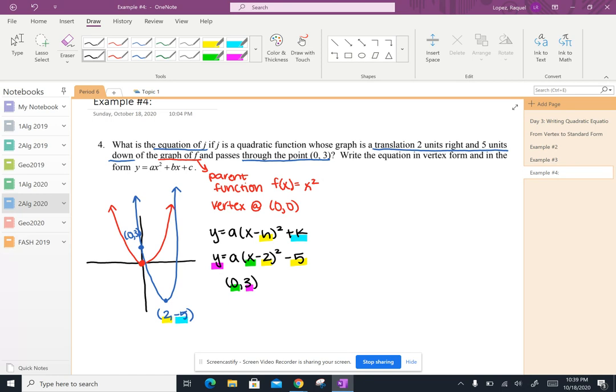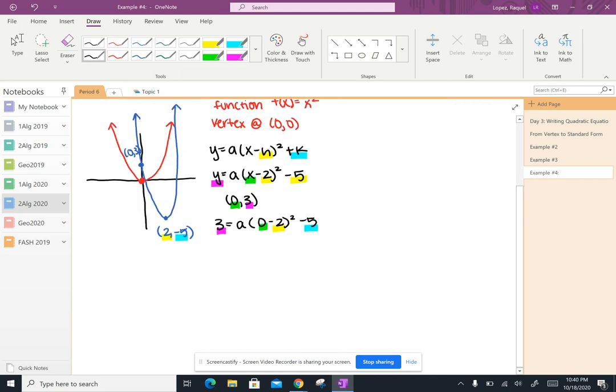So when I plug those values in, I get three equals, I don't know what a is, zero minus two squared minus five. And so now everything is substituted in and I can go ahead and start simplifying.